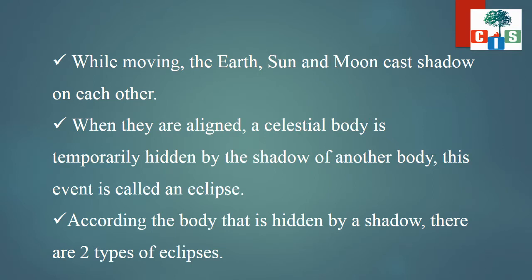So while moving, the Earth, Sun and Moon cast shadow on each other when they come in a line. A celestial body is temporarily hidden by the shadow of another body. Due to the shadow of one object, another body gets hidden. This hiding of a celestial body because of the shadow of another body is called the eclipse.